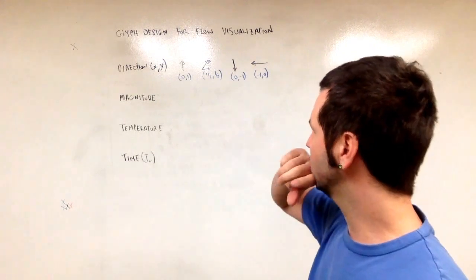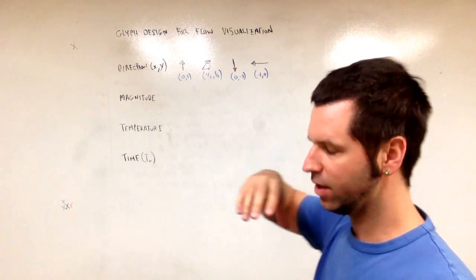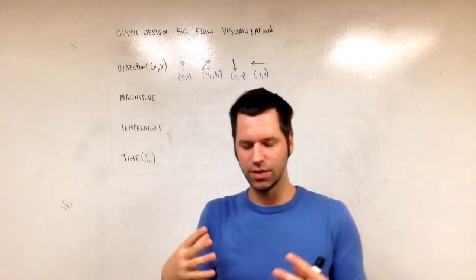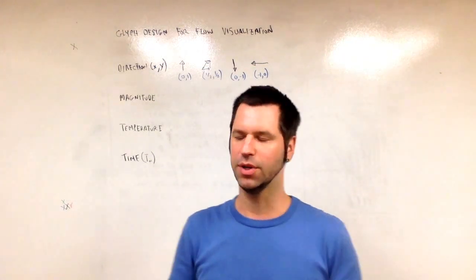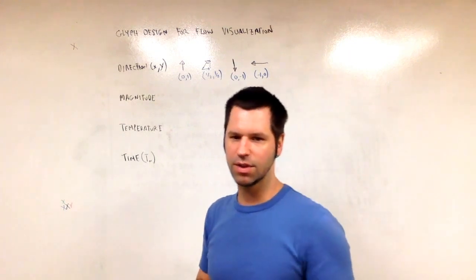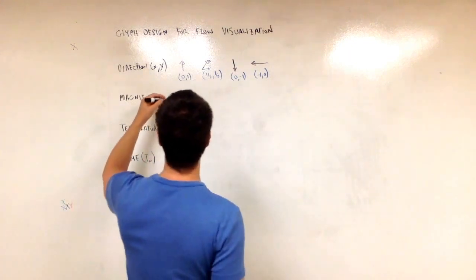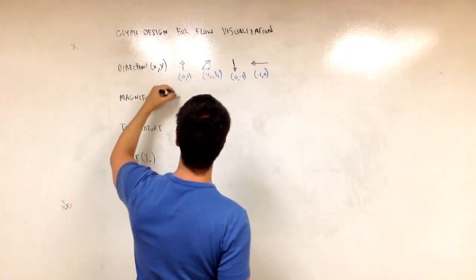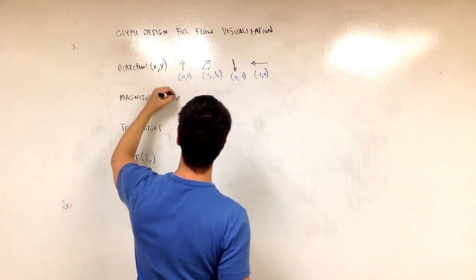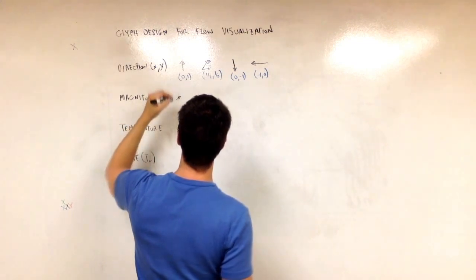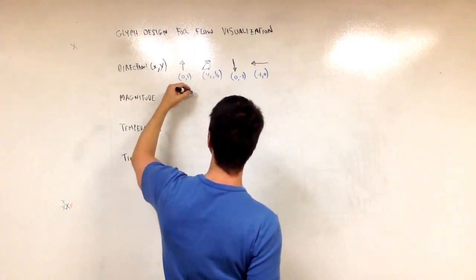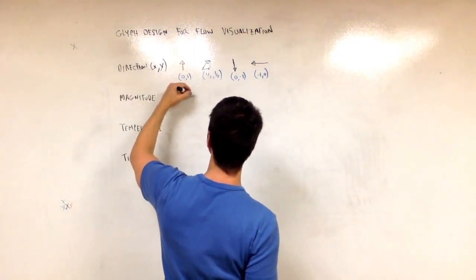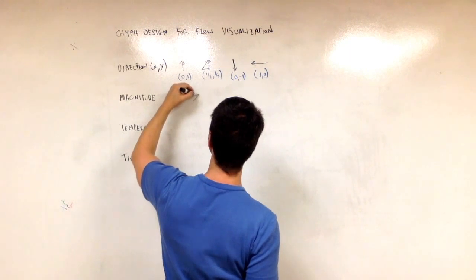Now, what about magnitude? Magnitude could be encoded. This is not the only possibility. It's just one possibility. As the length of the arrow. So we could have a very short arrow. And that's a very small magnitude.